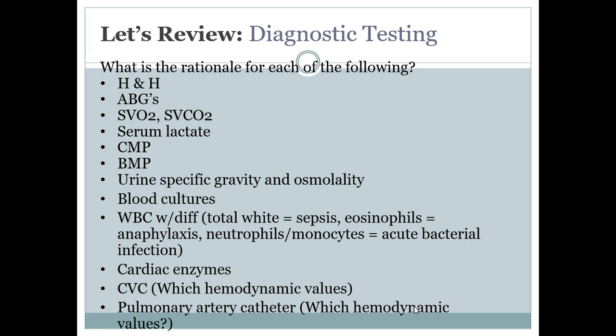H&H — hemoglobin and hematocrit — is done for fluid status. We're going to monitor for anemia, especially in hypovolemic shock, to see if there's any blood loss. For ABGs, there is a handout on Canvas with great information on how to complete and interpret ABGs, along with practice opportunities.